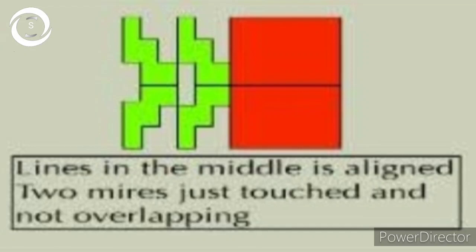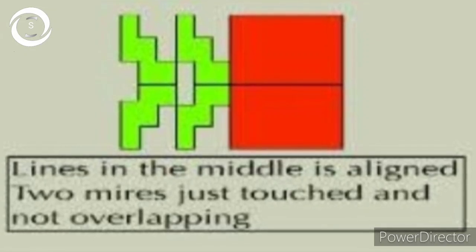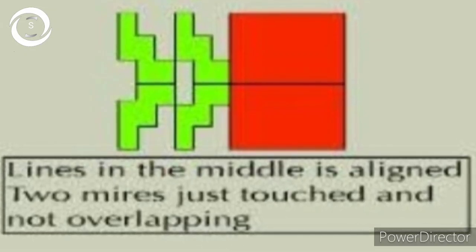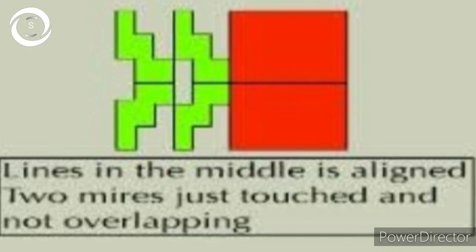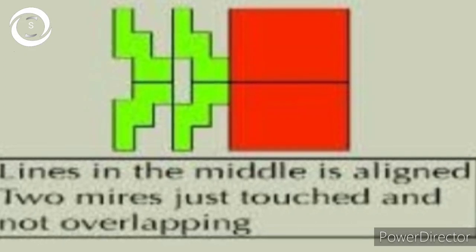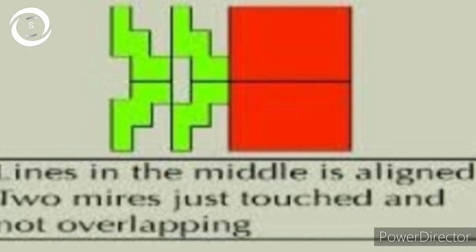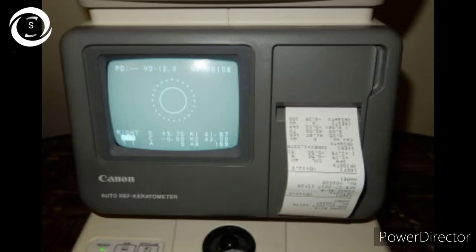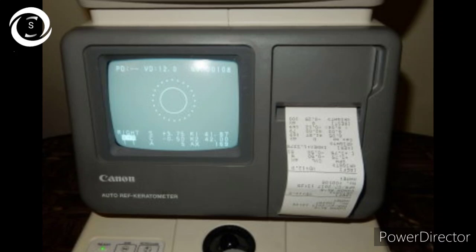Here, the line in the middle is aligned, the two mires are just touched and not overlapping, so that will give you correct readings. Take note of that reading, then move the machine perpendicularly, again align the mires, and take the other axis reading as well. That's how you use Javal-Schiotz.